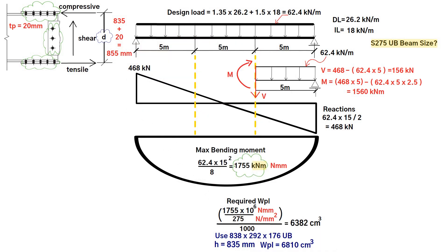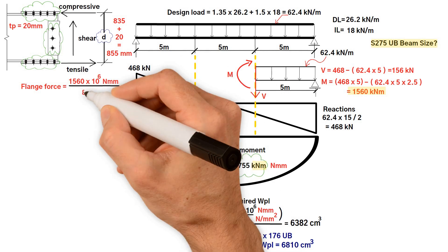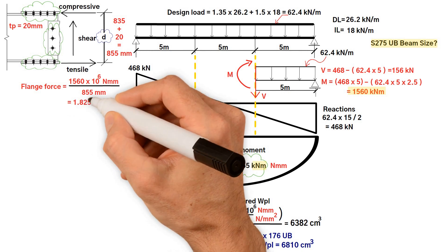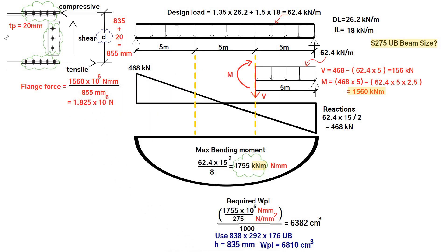Therefore, the flange force equals the bending moment at the splice, which is 1560 kilonewton meter. However, let's convert this to newton millimeter by multiplying 10 to 6, then divided by D, 855 millimeter, equals 1.825 times 10 to 6 newton.